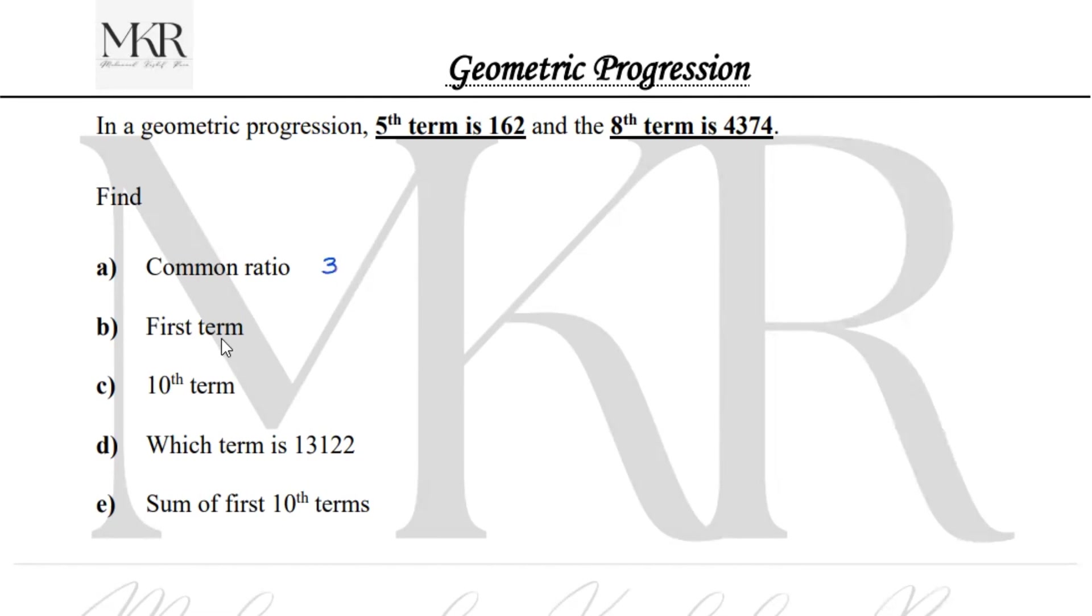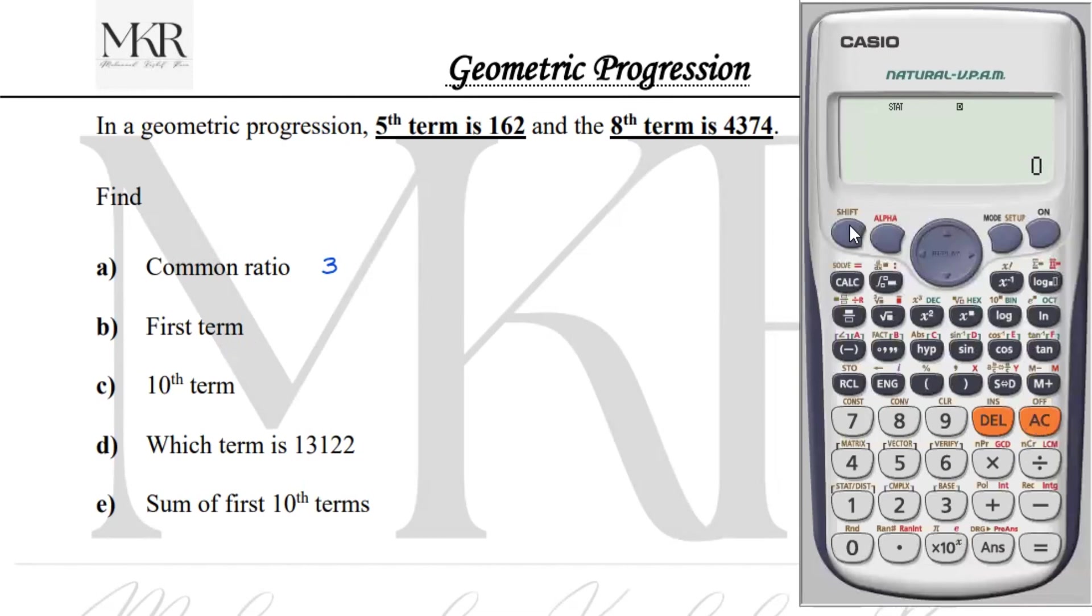Next we need to find the first term. To find first term, press shift, one, and five key. We have the fifth term, so press five key. After which you need to find the first term.